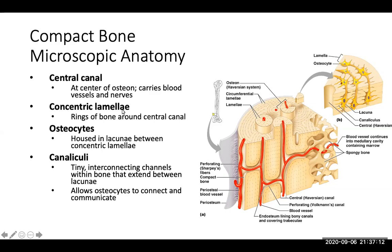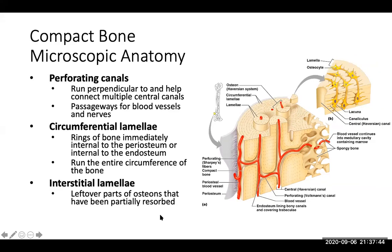Concentric lamellae are rings of bone around the central canal. Osteocytes are bone cells in the lacunae between the concentric lamellae. Canaliculi are tiny interconnecting channels between the lacunae that allow osteocytes to connect and communicate — almost like spider legs extending off the osteocytes. Perforating canals run perpendicular to the central canal and connect multiple central canals, carrying blood vessels and nerves. Circumferential lamellae are rings immediately internal to the periosteum. Interstitial lamellae are leftover parts of osteons that have been partially resorbed.